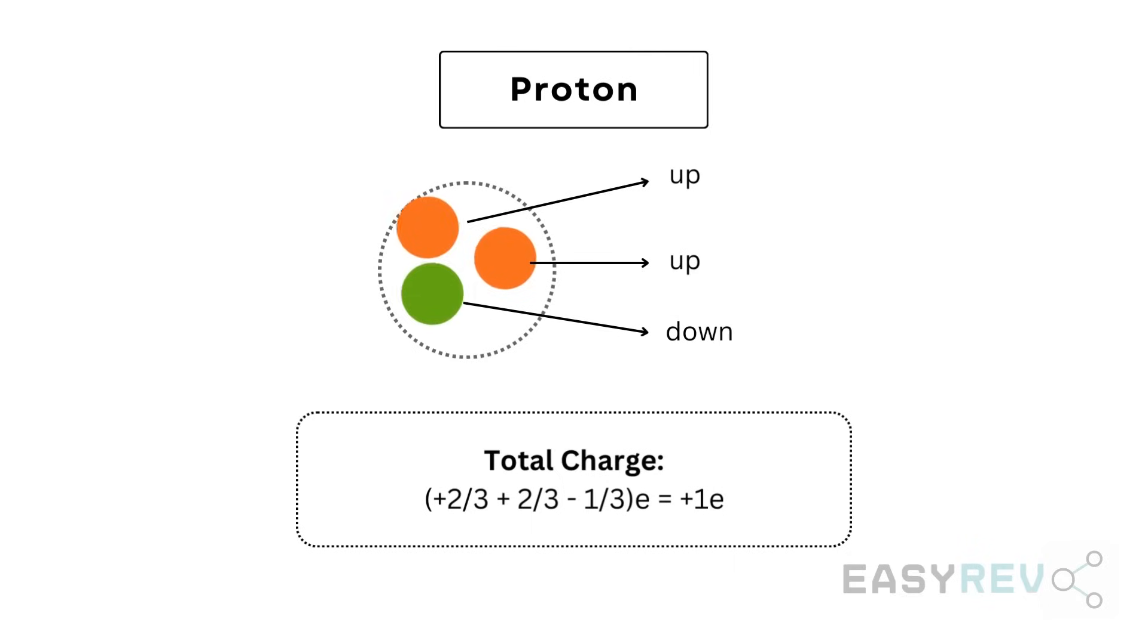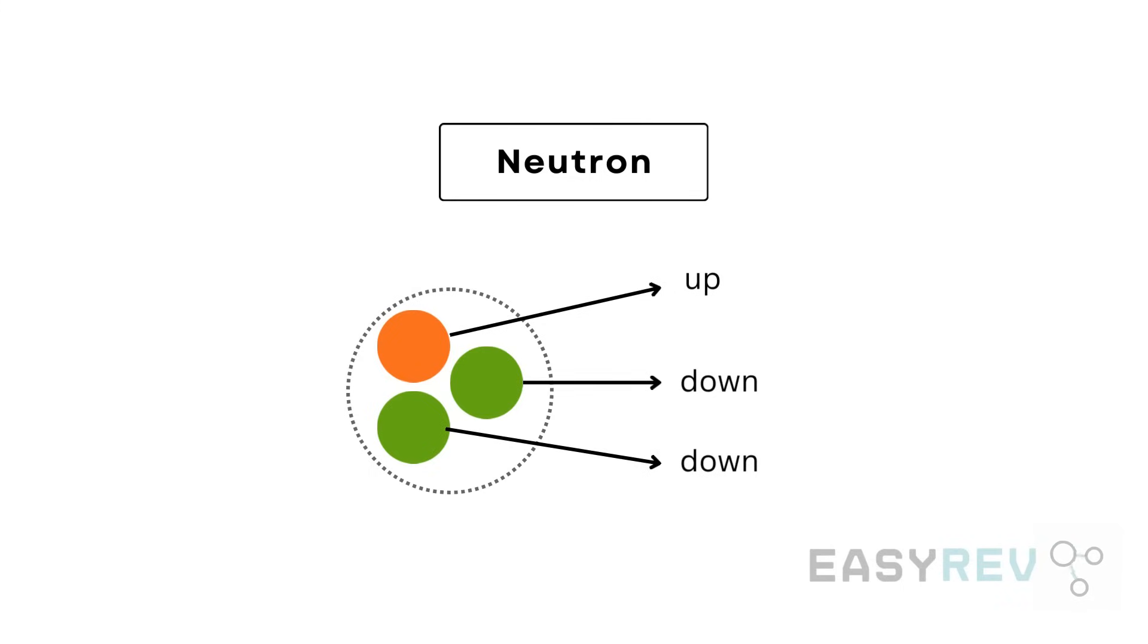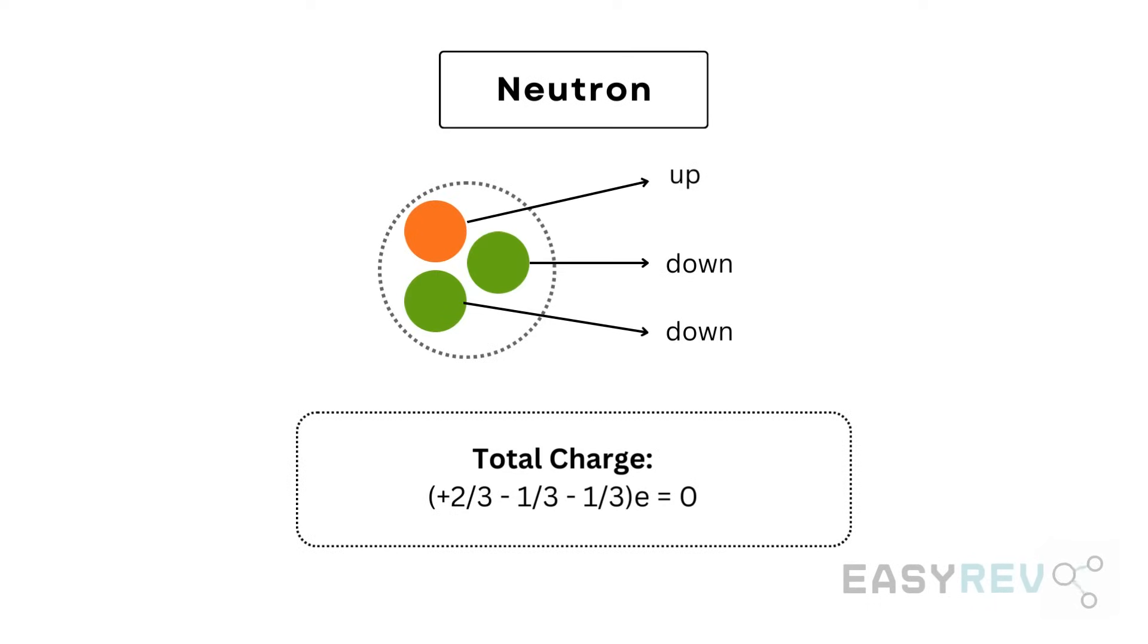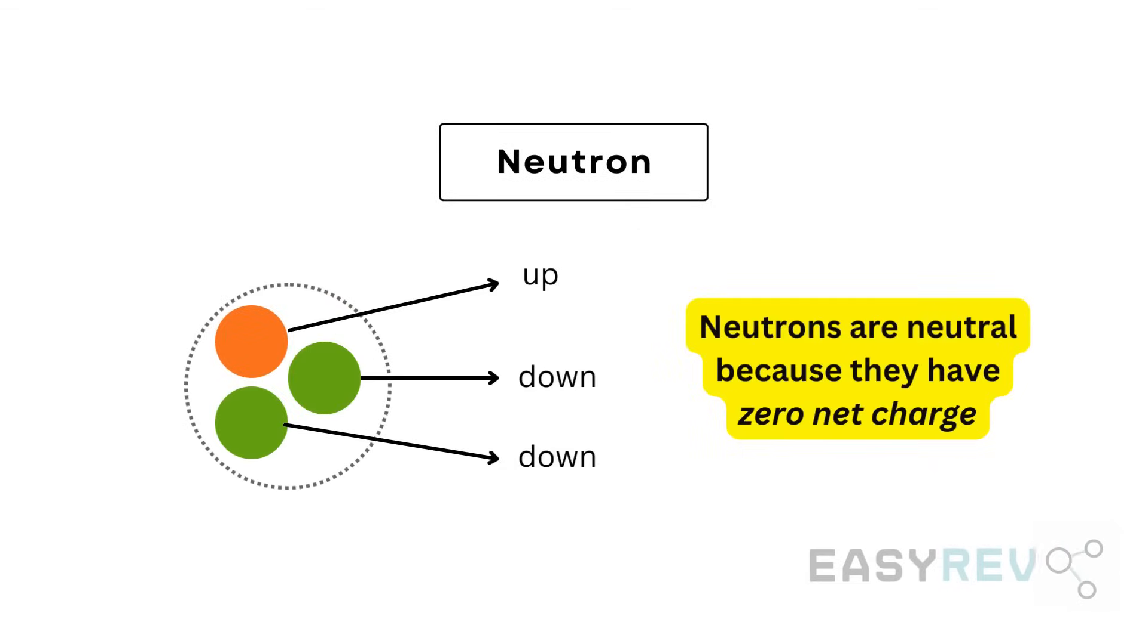The neutron is made up of one up and two down quarks. Here, when you add up the fractional charges, the total charge ends up being zero. This goes to show that neutrons are neutral because of zero net charge.